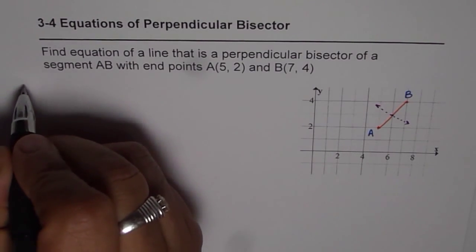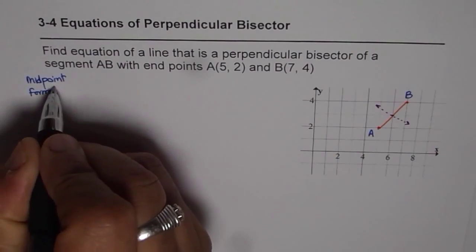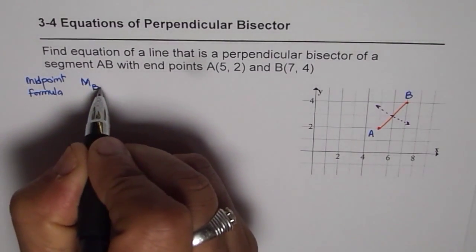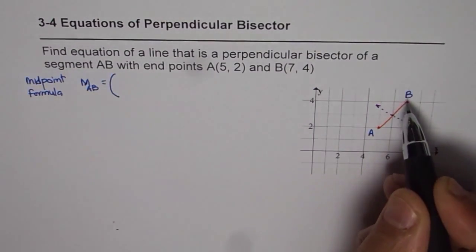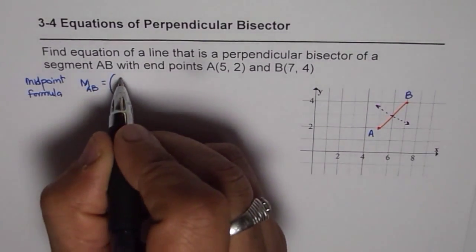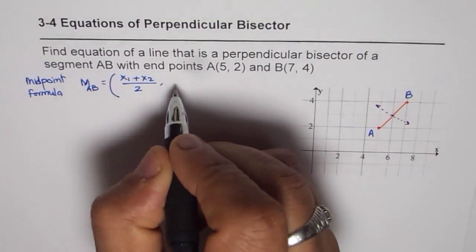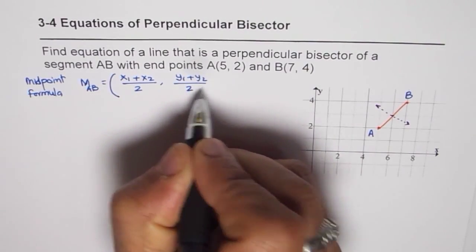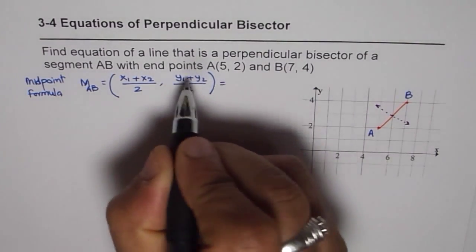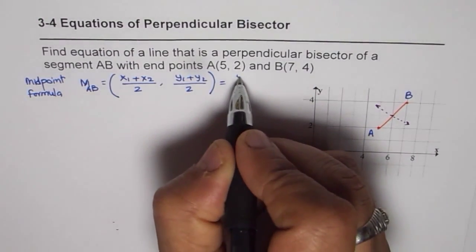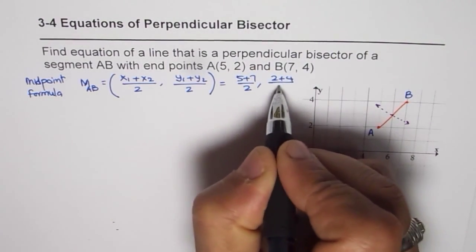The midpoint formula is that the midpoint of AB equals the average of their x and y values. The formula is (x1 + x2)/2 for the x-coordinate and (y1 + y2)/2 for the y-coordinate.